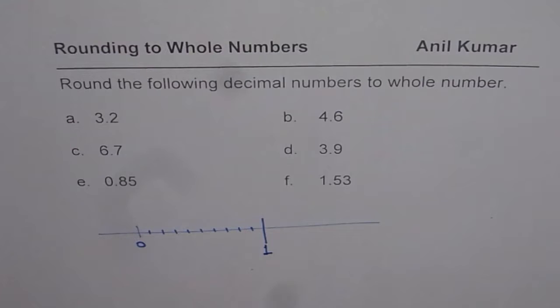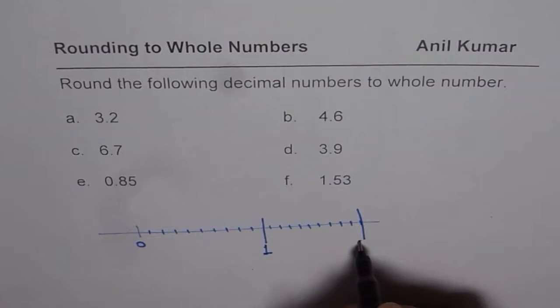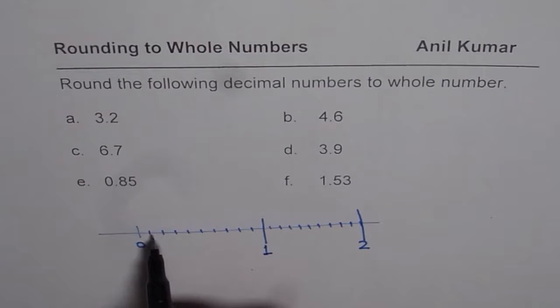So that becomes 1 for us, right? Similarly, we can have 1, 2, 3, 4, 5, 6, 7, 8, 9, 10. So the 10th one becomes number 2. So each division is divided into 10 equal parts.